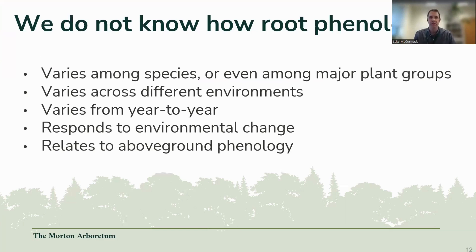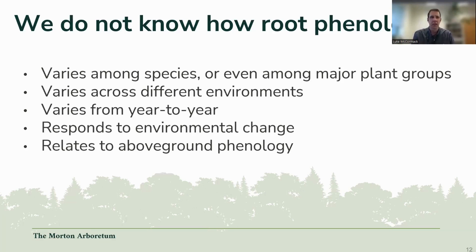Some big statements on root phenology — things we don't know: we do not know how it varies among species or even among major plant groups like angiosperms versus gymnosperms. We do not know how it varies across different environments, or how it varies within the same environment from year to year. We don't know how to expect patterns of phenology to change in response to changing precipitation, temperature, or competition with neighboring species. Ultimately, we don't know how it relates to above-ground phenology — important both for understanding within-plant trade-offs and because if we could predict it from easier above-ground measurements, that would be a real benefit.